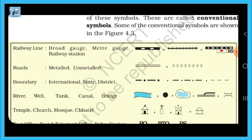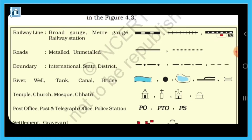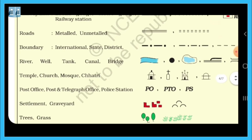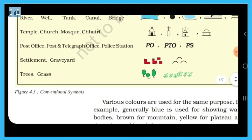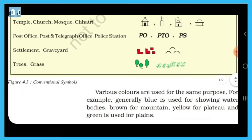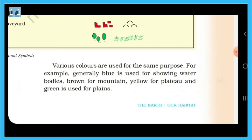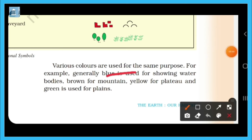For example, a railway track is shown with a specific symbol, roads with a double line, and boundaries with a boundary line. Rivers are shown in blue color, trees in green color, and settlements in red. Blue is used for water bodies, and brown is used for other features.